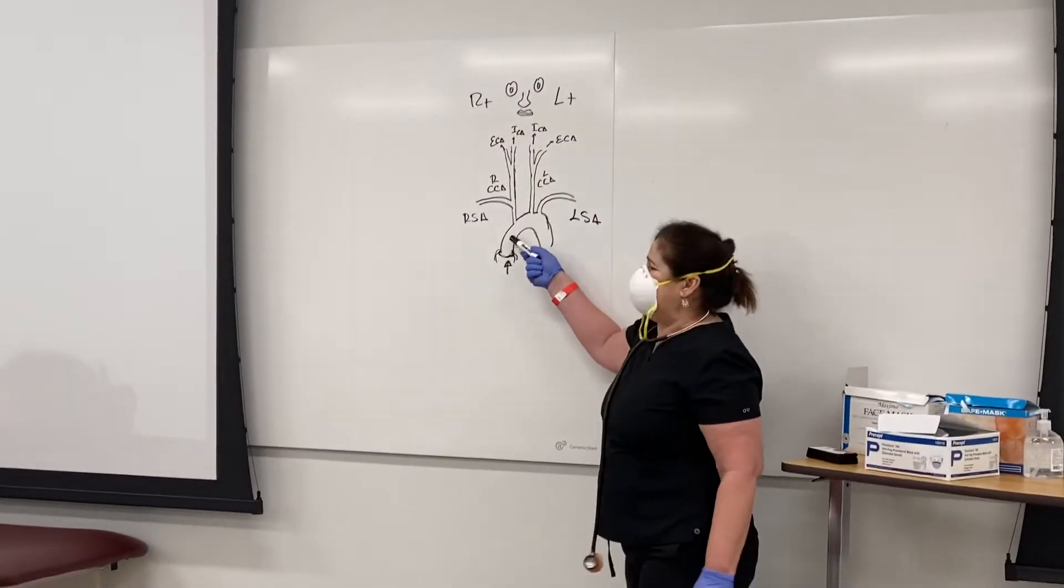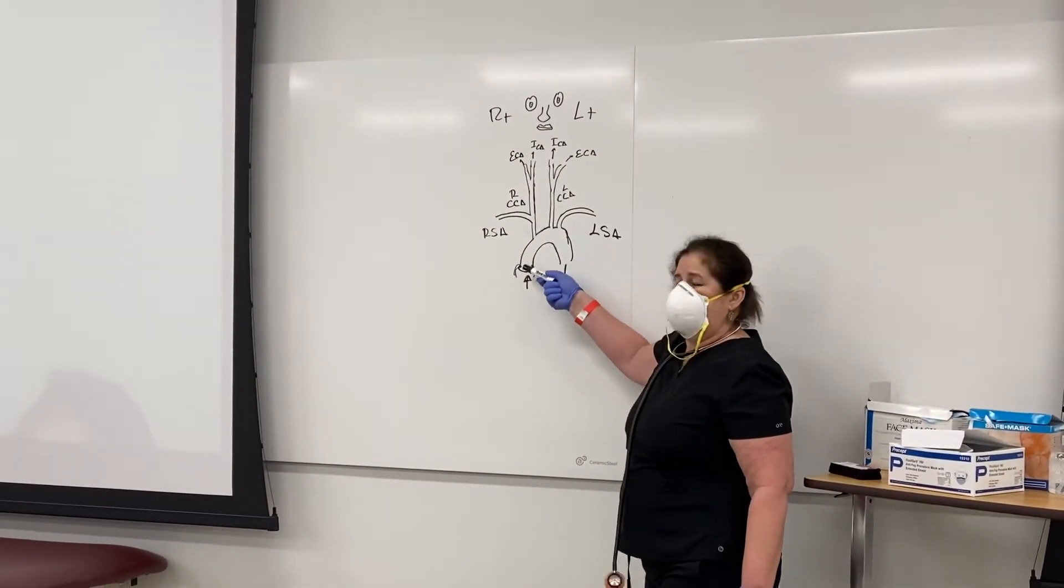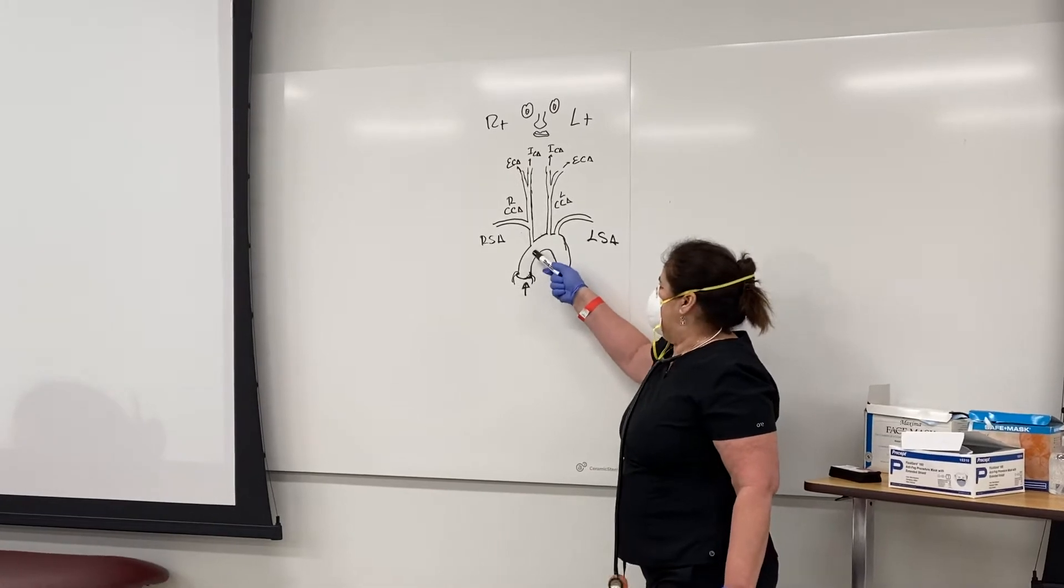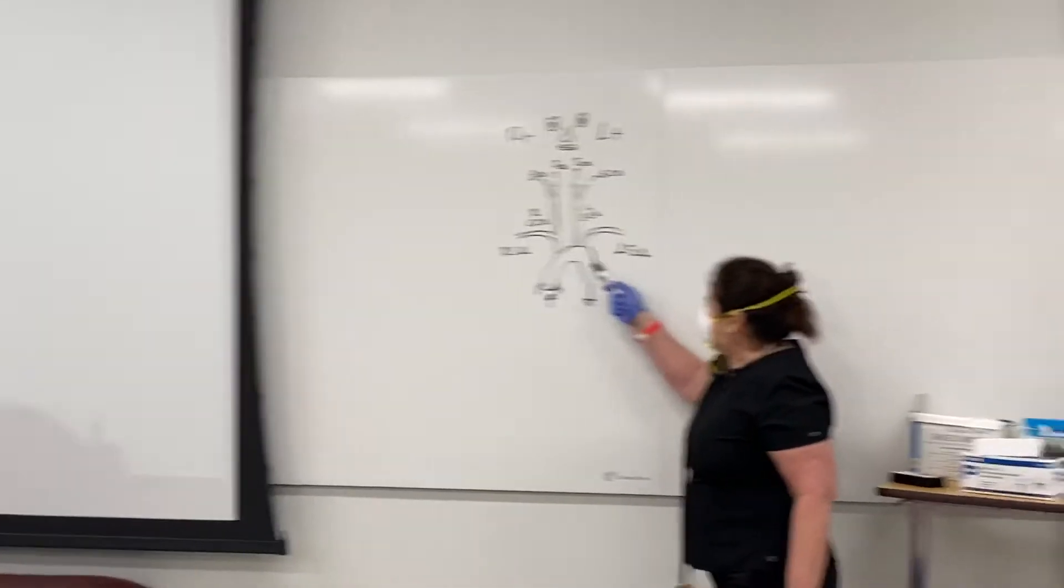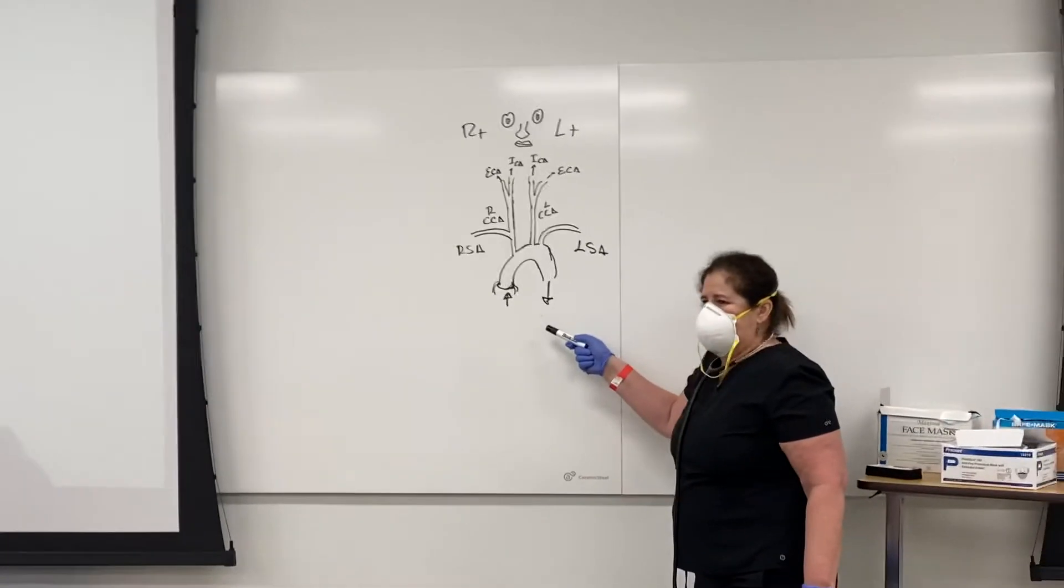This is the ascending aorta artery over here, okay? The aortic arch. And this is the descending aorta artery.